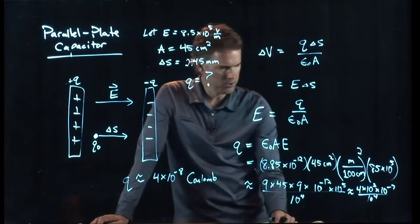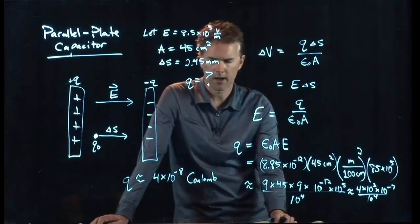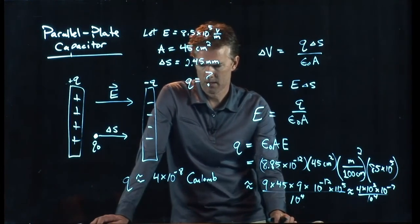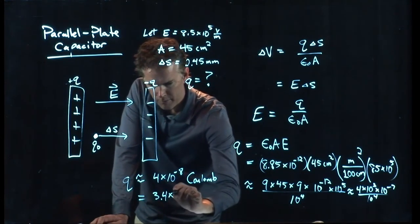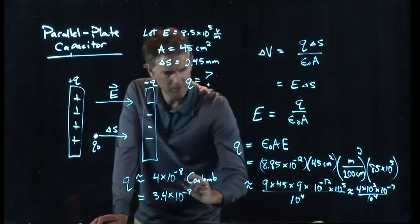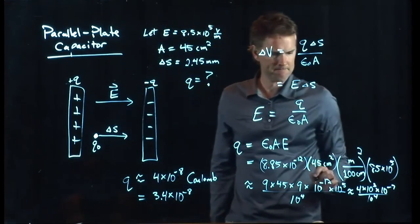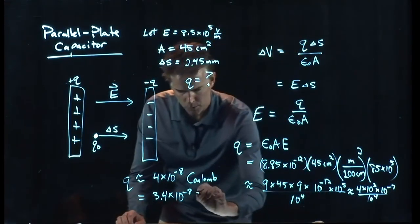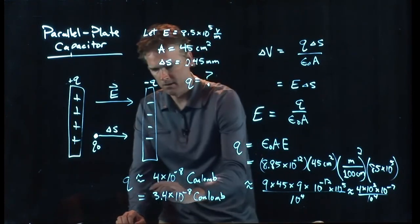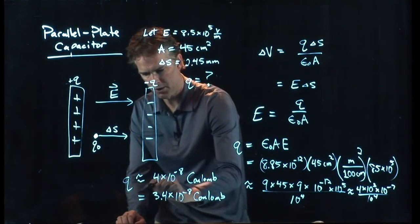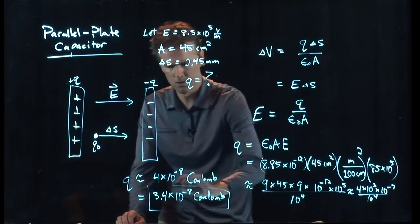Did anybody punch in your calculator and tell me how far off I am? I got 3.4 times 10 to the minus 8. Okay. So we were off a little bit. 3.4 times 10 to the minus 8. Is that what you got? Yeah. Coulombs. Does anybody else concur on that number? That's what you got? That's what you got?